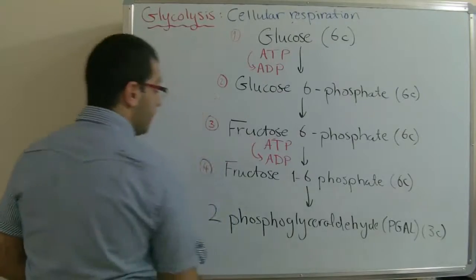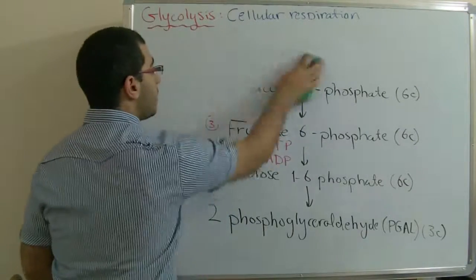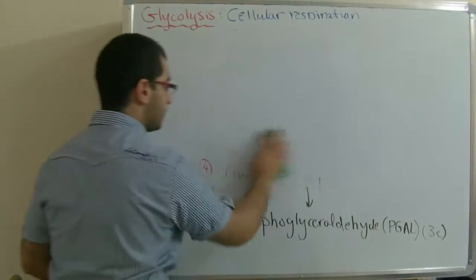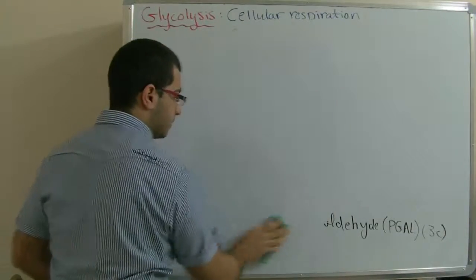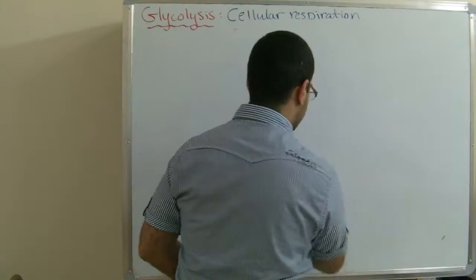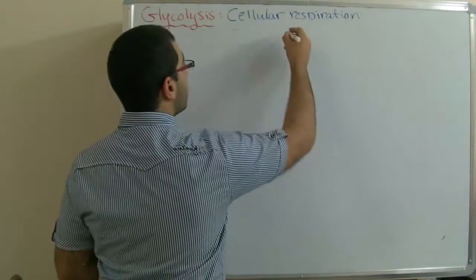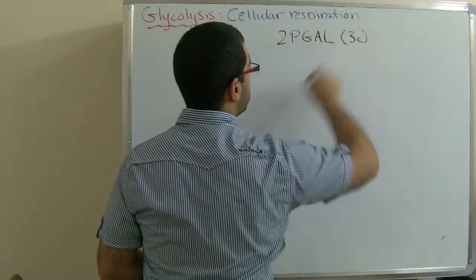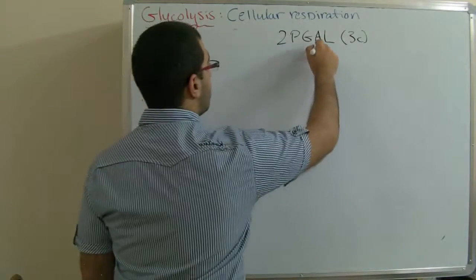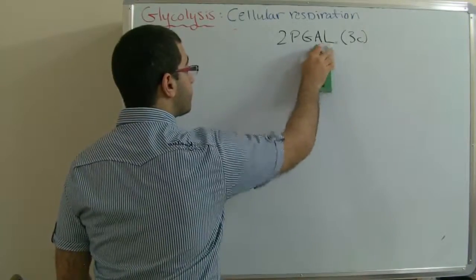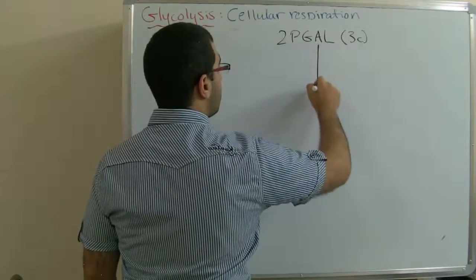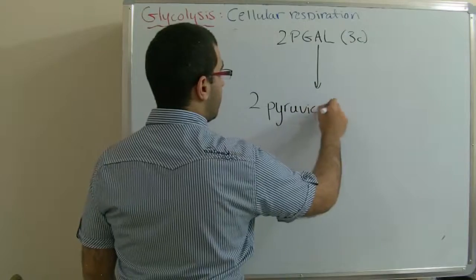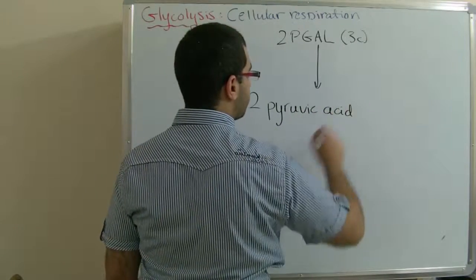This 2PGAL, each has 3 carbon atoms. This changes into two pyruvic acid molecules, and each with three carbon atoms.